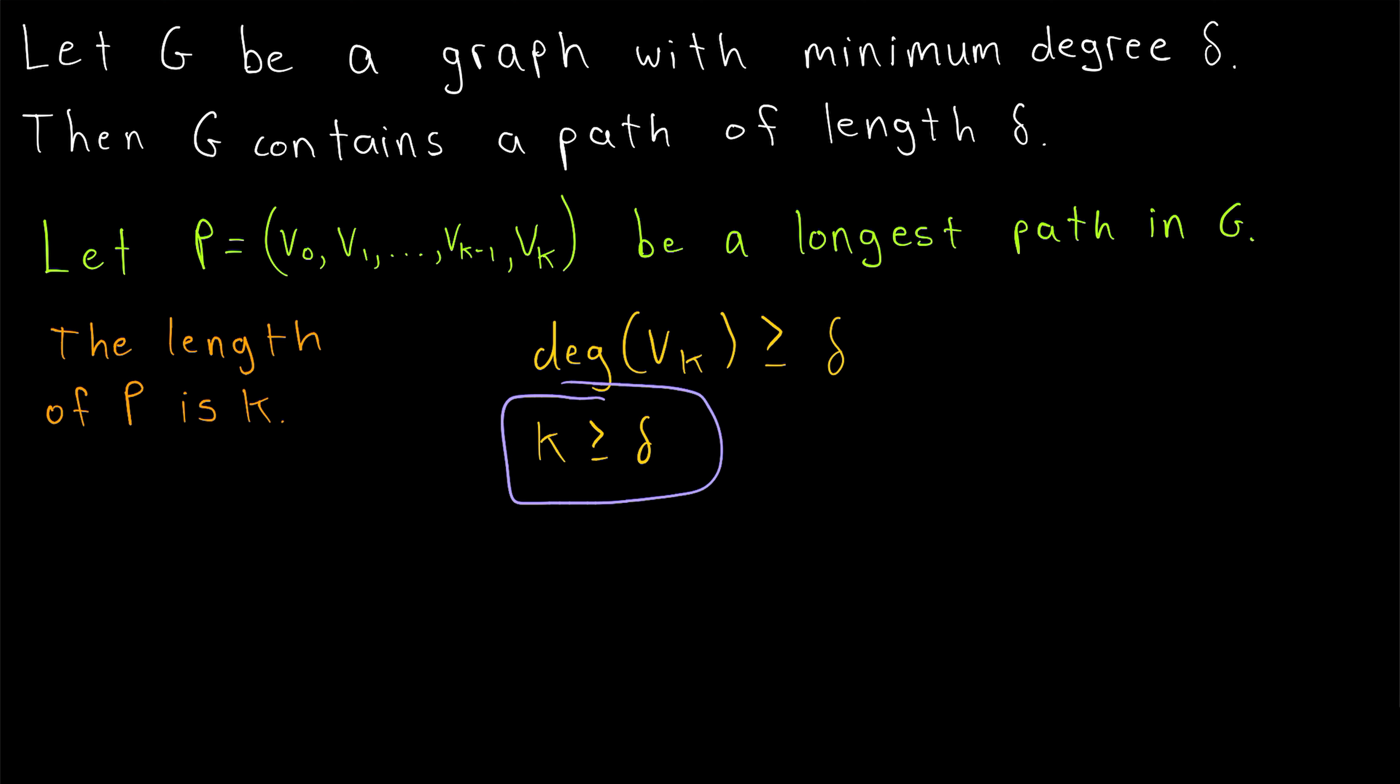And then we're practically done. k being greater than or equal to delta, of course, is significant because the length of our path P is k. So the length of P is at least delta.